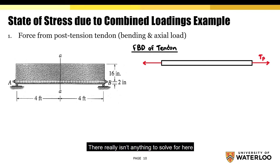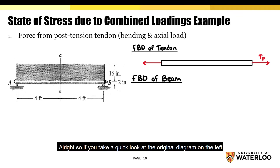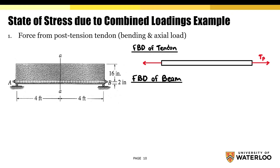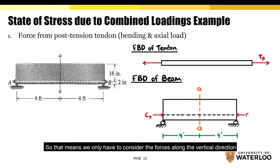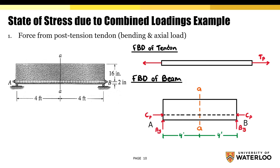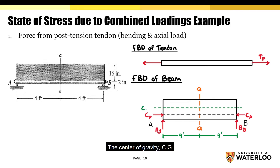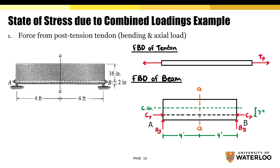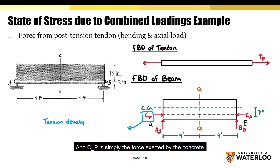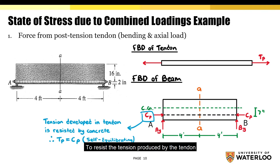Now we'll move on to the FBD for the concrete beam. The original diagram has two roller supports, so we only have to consider forces along the vertical direction. The reaction forces at points A and B are labeled AY and BY respectively. The center of gravity CG is located seven inches from the top of the tendon, represented by the dotted black line, and CP is the force exerted by the concrete to resist the tension produced by the tendon, so TP equals CP.